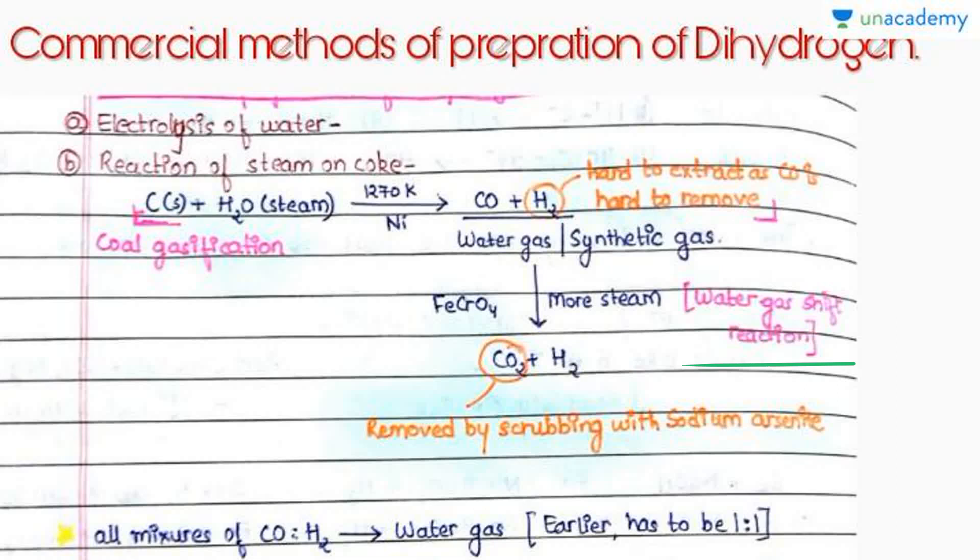Two name reactions: the coal gasification reaction is the horizontal reaction and the water gas shift reaction is the vertical reaction. Earlier when CO and H2 were in 1:1 molar ratio, we called it water gas or synthetic gas. But now there is no restriction—CO and H2 mixture at any proportion we call it water gas or synthetic gas.